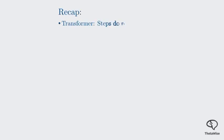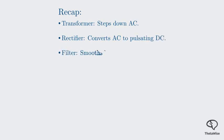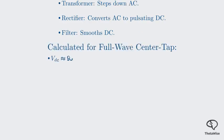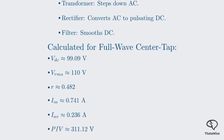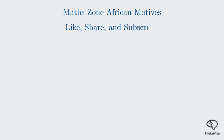Let's quickly recap what we've covered today. We started by explaining the fundamental components of a DC power supply: the transformer steps down the AC voltage, the rectifier converts it to pulsating DC, and the filter smooths the pulsations into a stable DC voltage. Then we applied these concepts to a full-wave center tap rectifier, calculating the DC voltage, RMS voltage, ripple factor, maximum current, average diode current, and peak inverse voltage. These calculations are crucial for designing and understanding power supply circuits. This lesson was brought to you by MathZone African Motives — remember to like, share, and subscribe. Thank you for watching.